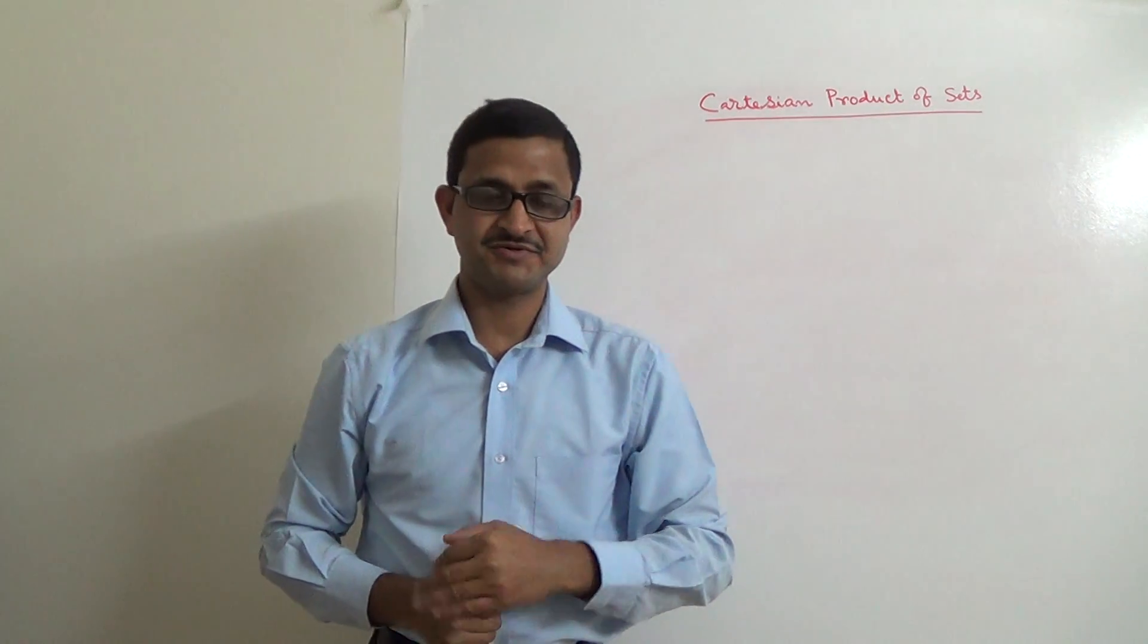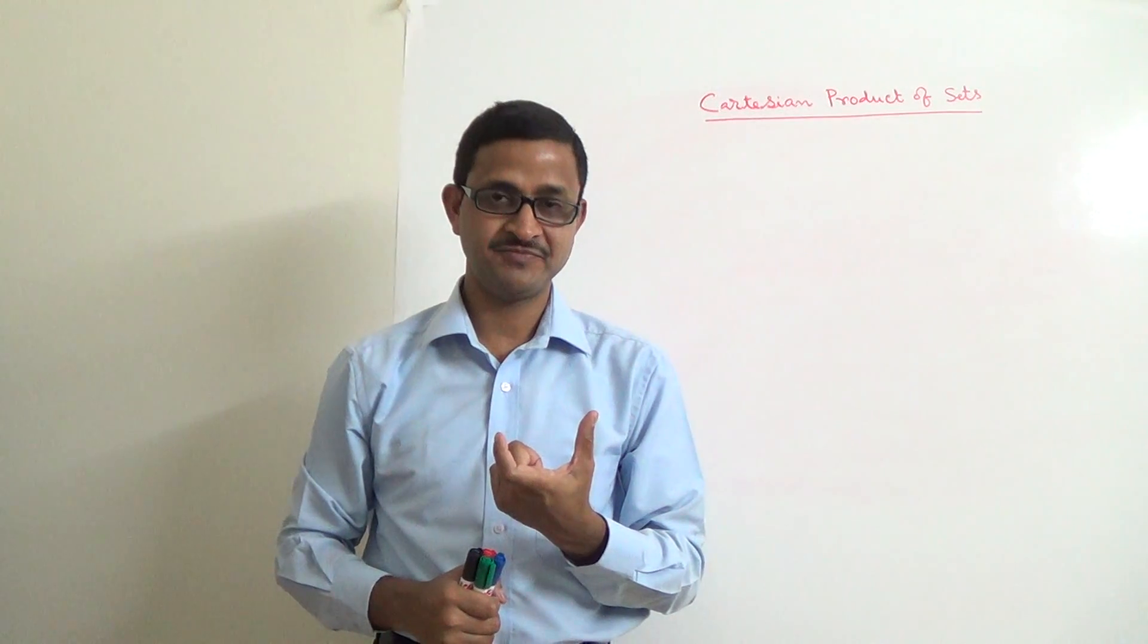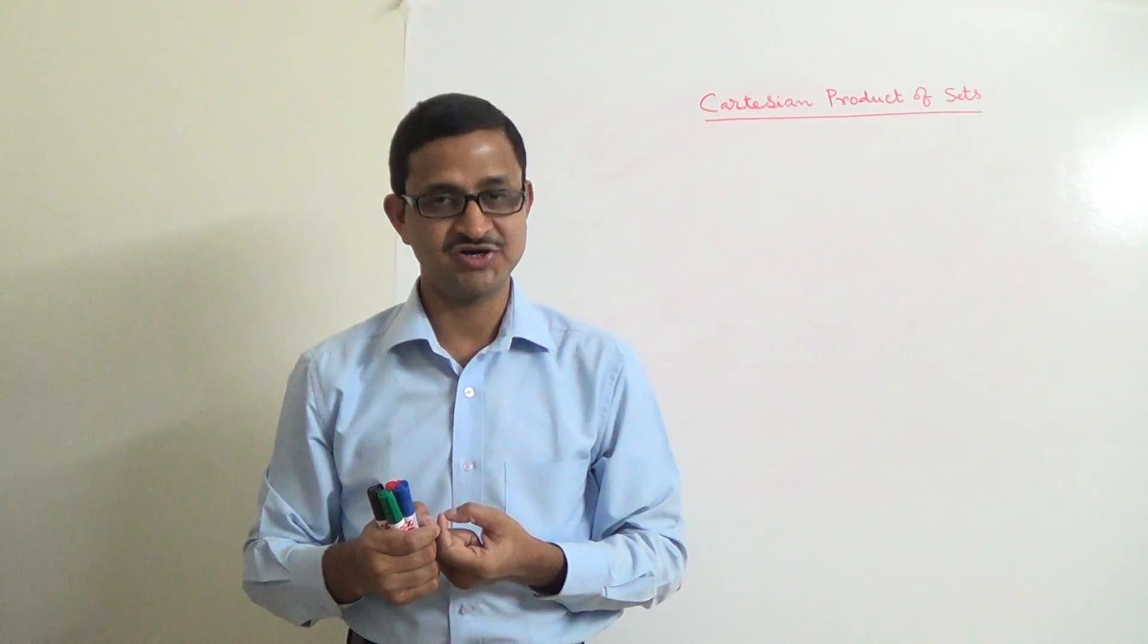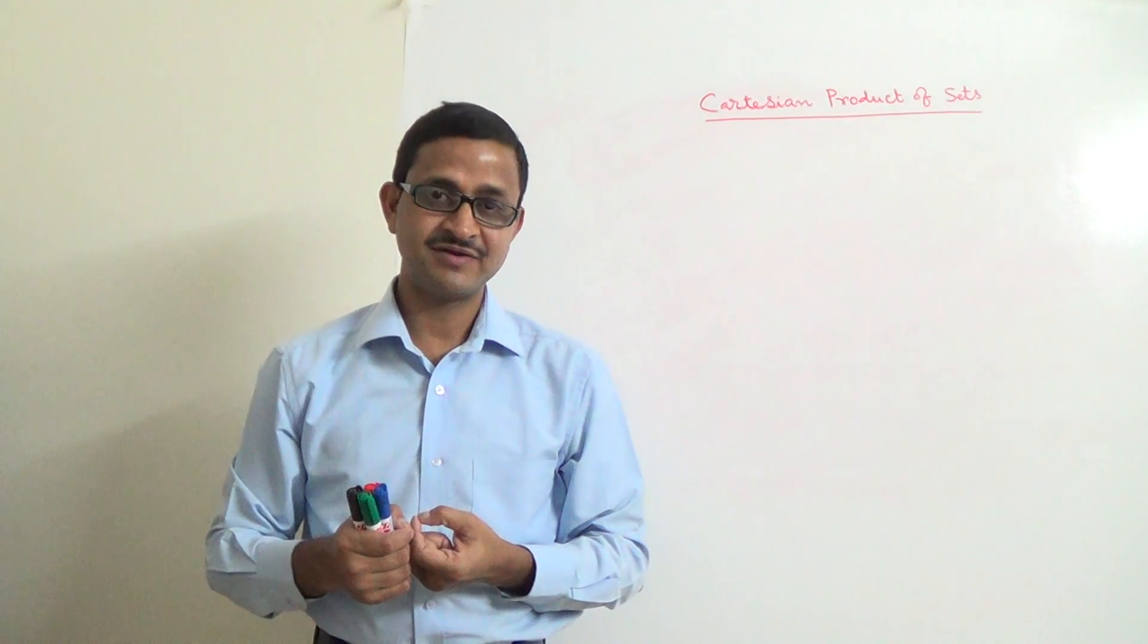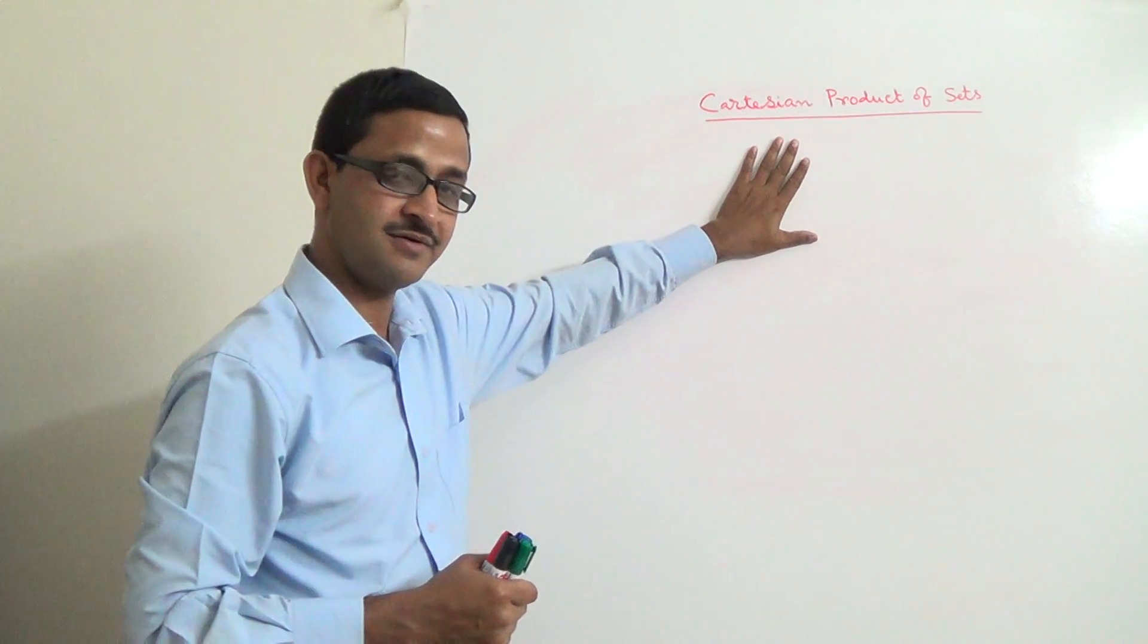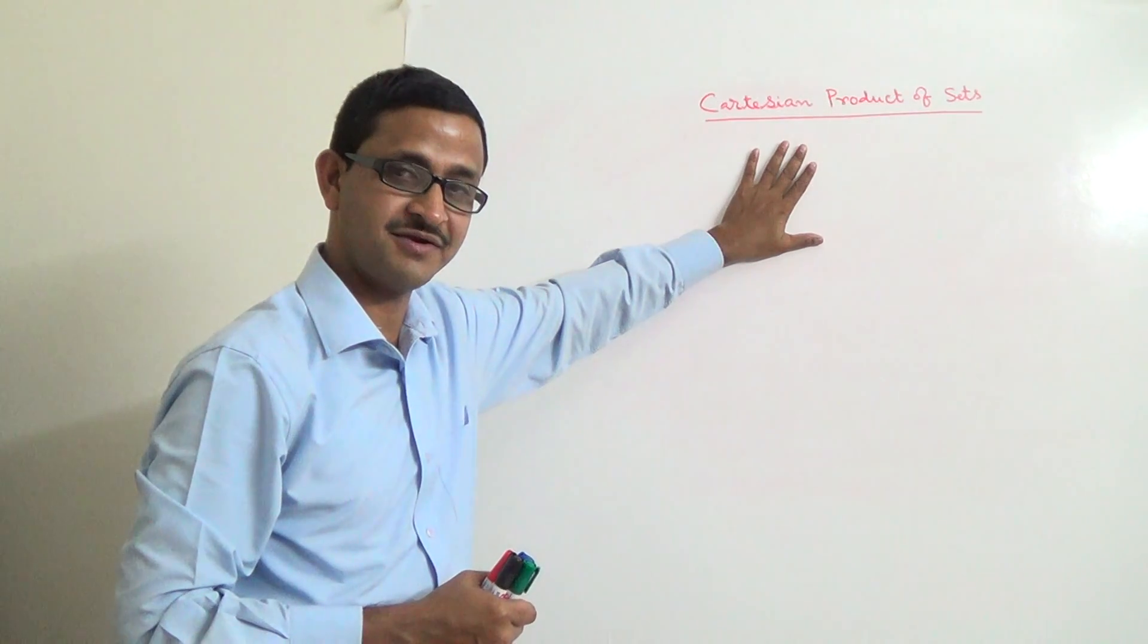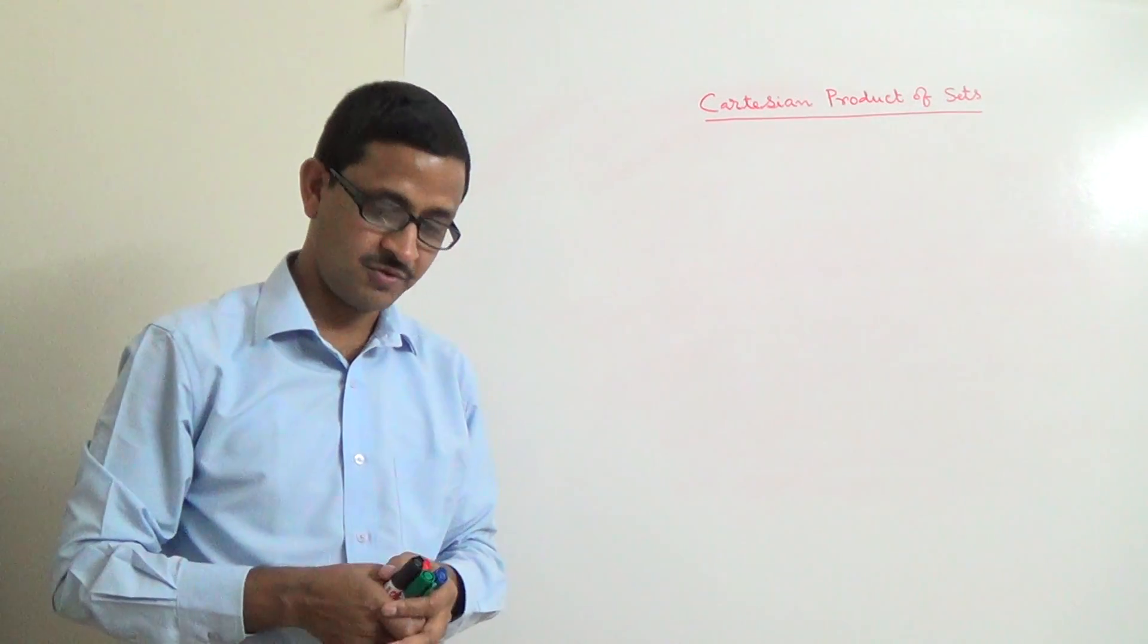This is the last topic of set and it is so important topic that it is the beginning of the next two relevant topics called relation and function. What is Cartesian product of two sets?